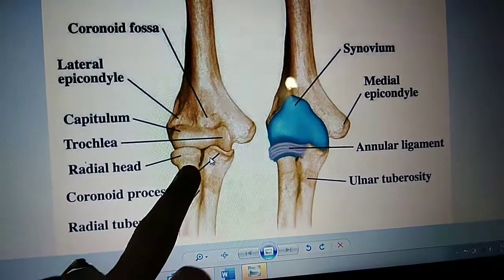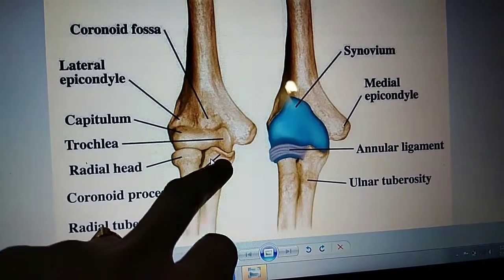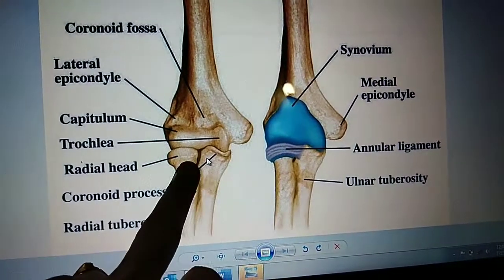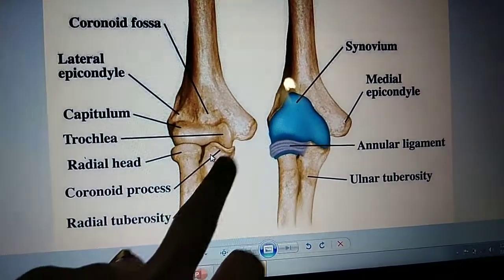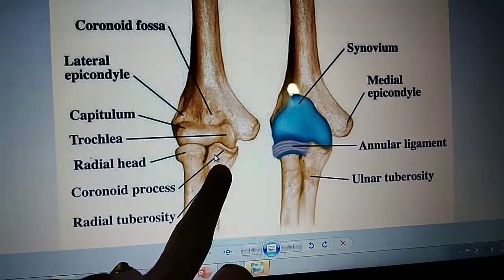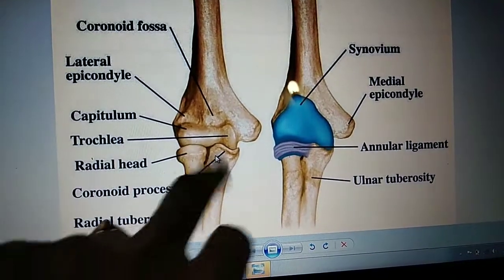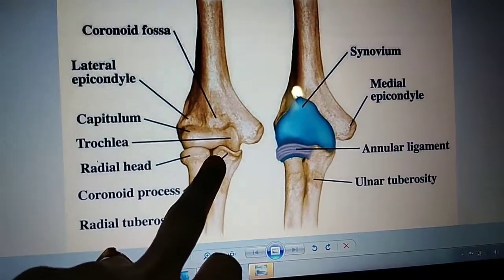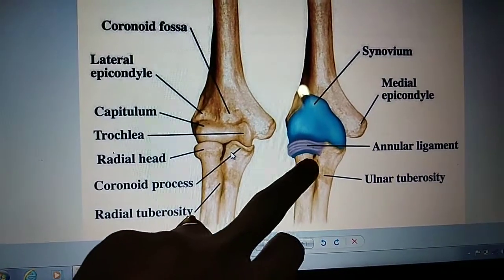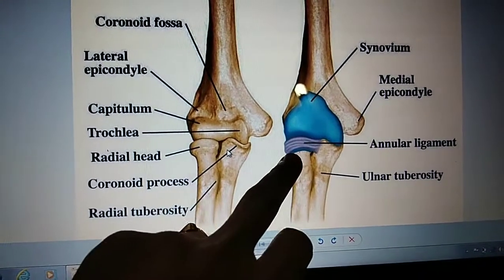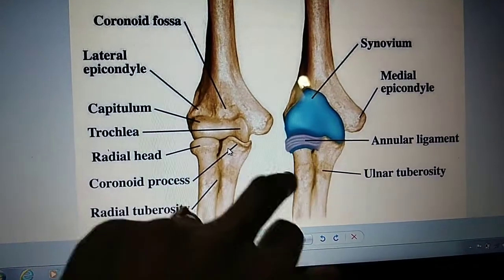The first articulation is the humerus articulating with the radius, then we have the capitulum articulating with the head of the radius. We also have a superior radioulnar joint and an annular ligament which rotates around the radius, joining the radius with the ulna.